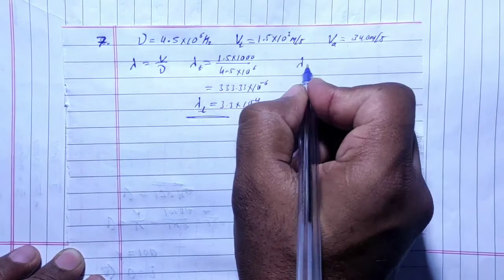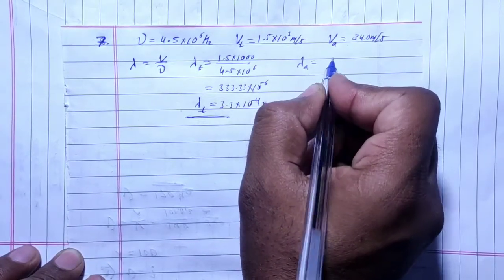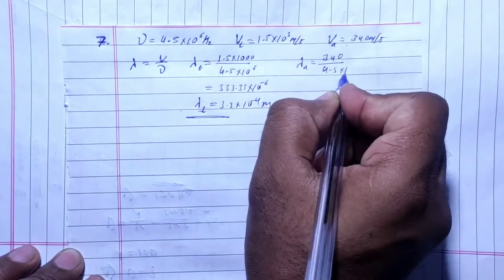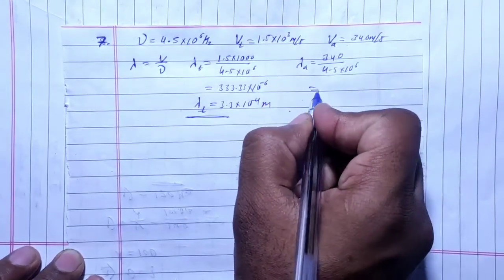For air wavelength λ_a, speed is 340 m/s and frequency is 4.5 × 10⁶ Hz.